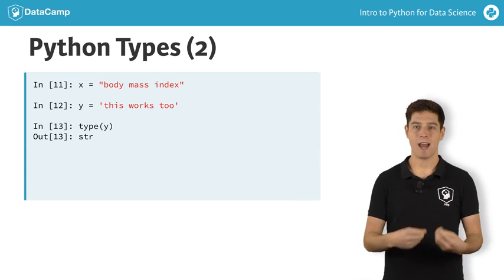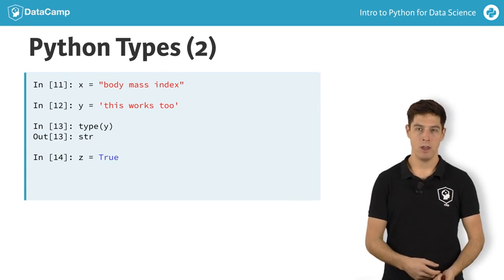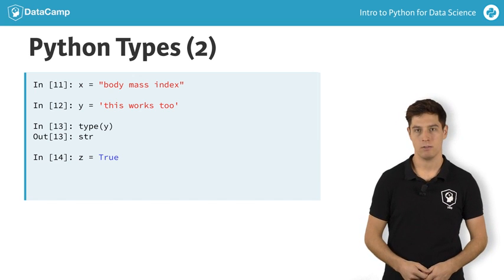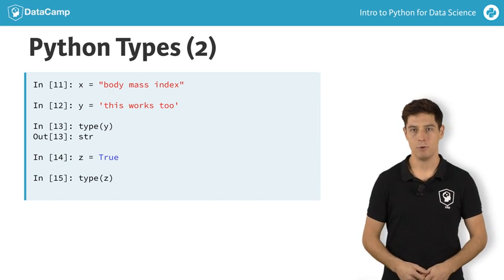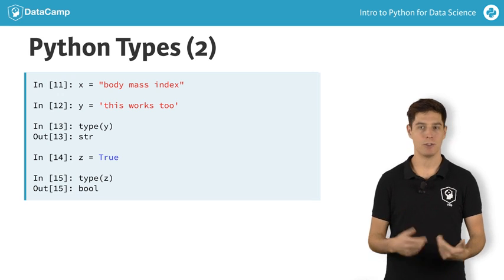The boolean is a type that can either be true or false. You can think of it as yes and no in everyday language. Booleans will be very useful in the future, to perform filtering operations on your data, for example.